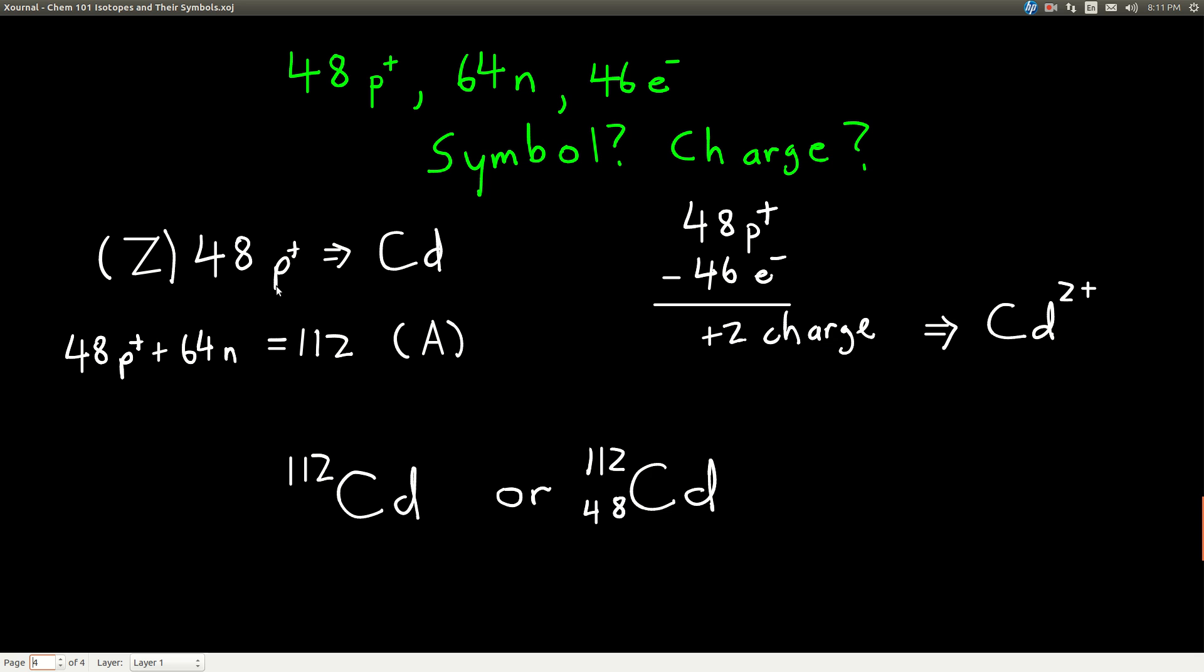So the atomic number, or Z, is 48. Because there's 64 neutrons, we add up the protons plus neutrons, gives us 112, and that's the mass number A.